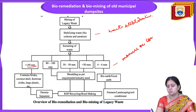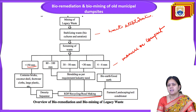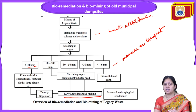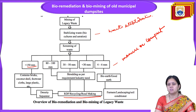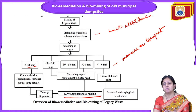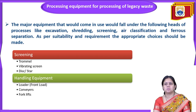Bio-earth (4–6 mm) goes for farmers, landscaping, and soil conditioning. After shredding, materials enter RDF (Refuse Derived Fuel) processing, recycling, or road making. An RDF center and MRF (Material Recovery Facility) location center are established, followed by a recycling unit. This is the overview of the bioremediation and biomining process for legacy waste, where old municipal dumping sites are processed to reclaim the land for useful purposes.